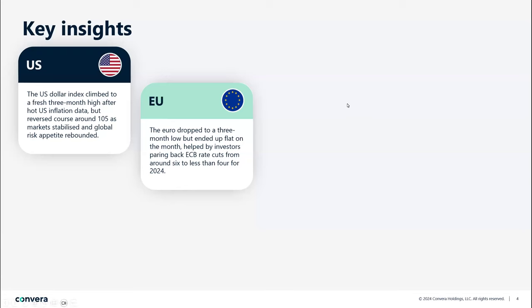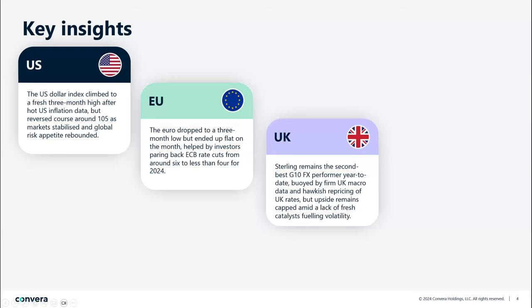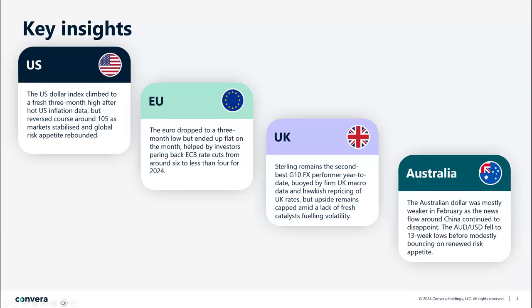For the British pound, we had that strong January performance supported by the uptick in UK inflation and strong activity data, leading to hawkish repricing of Bank of England interest rate expectations. February was slightly weaker — there was a lack of fresh catalyst fueling volatility — but the pound is still the second-best performing currency of the majors after the US dollar year to date. The Aussie dollar remains under pressure due to continued negative news flow out of China, but did find some much-needed support thanks to renewed risk appetite globally in the hope that central banks will start cutting rates later this year.